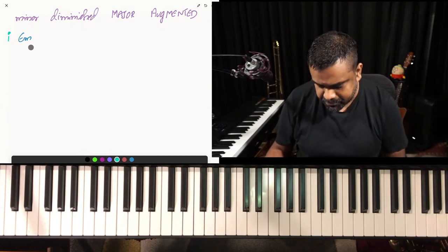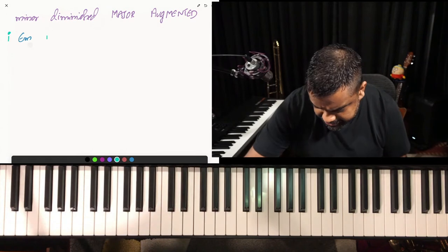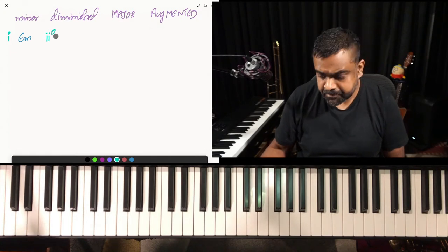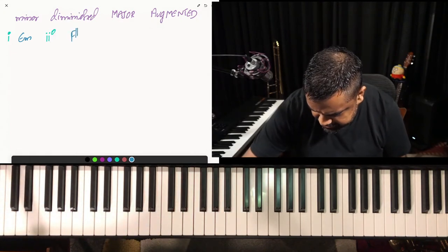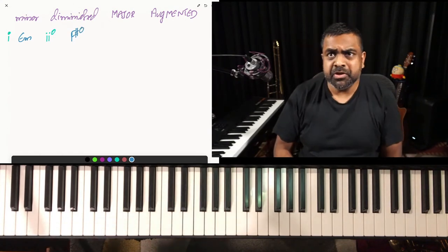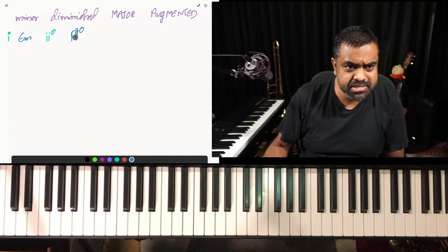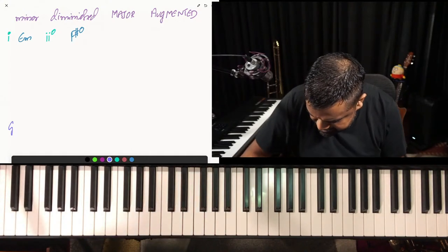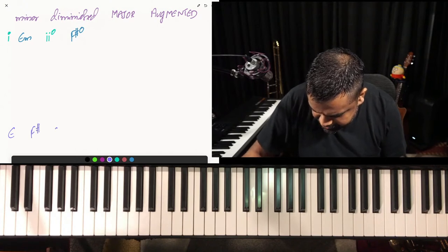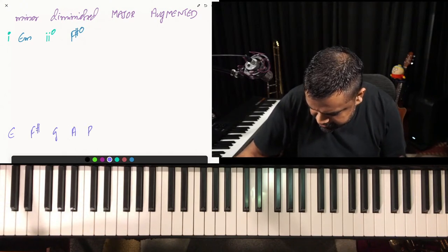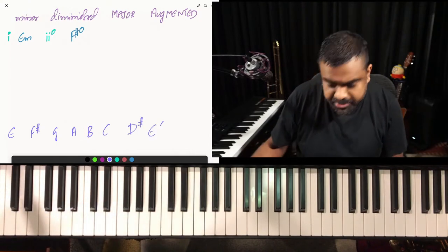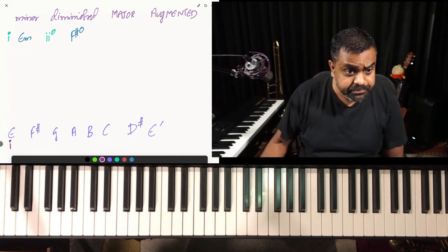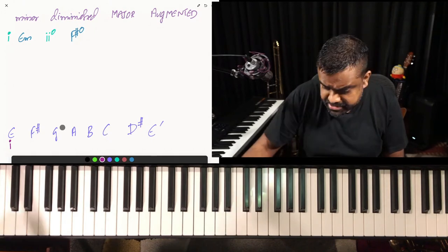Moving on: the two chord in a harmonic minor scale is a diminished chord. We write two with a degree sign. The two of this particular scale is F# diminished — you can write 'dim' or the degree symbol. The scale again for reference: E, F#, G, A, B, C, D#, E. The first degree is E minor, the second is F# diminished.